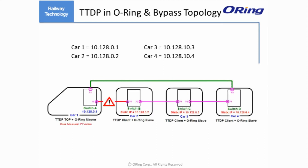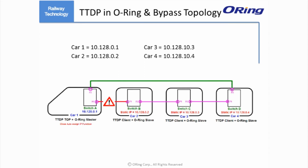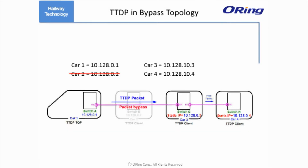In this way, when the master link is down and the redundant link is enabled, the head train switch will not reassign an IP address for other onboard switches. All switches will continue to use the same IP address until TDDP is enabled at the next train arrangement. The switches in a bypass structure will also continue to use the same IP addresses when an inline device fails.